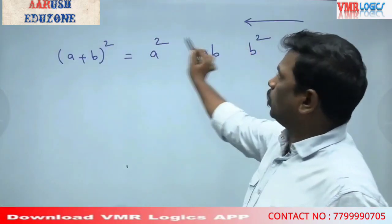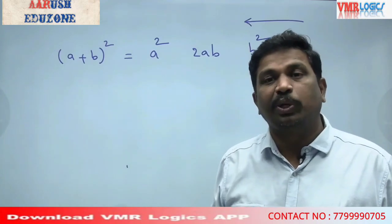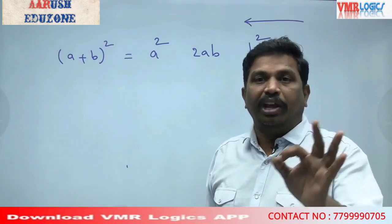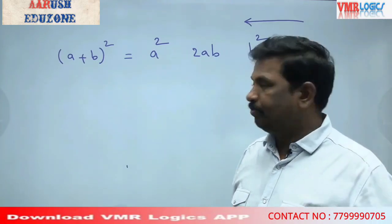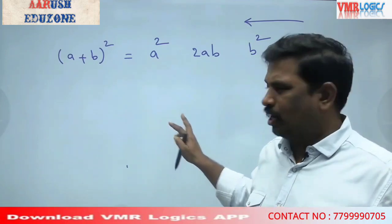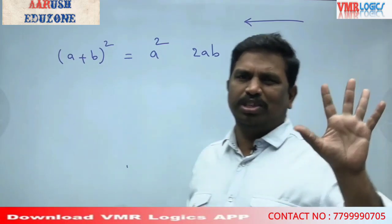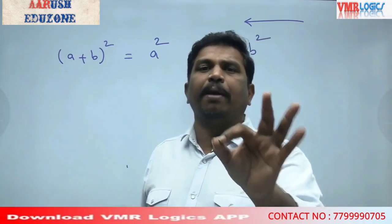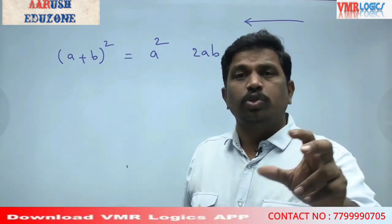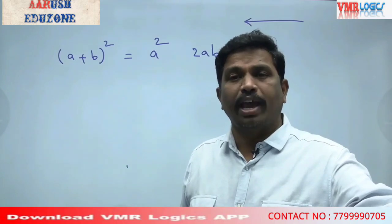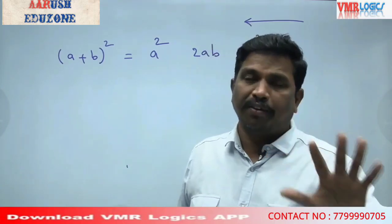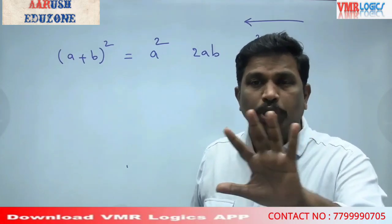Evaluation is done right to left. The VMA formula rule: A plus B whole square = A square, 2AB, B square. Evaluation of the right to left is equal to the result.